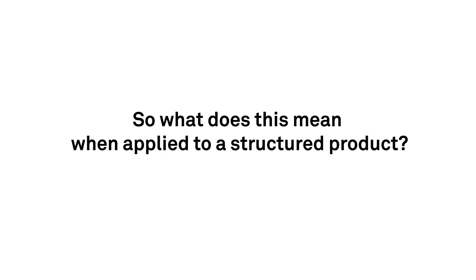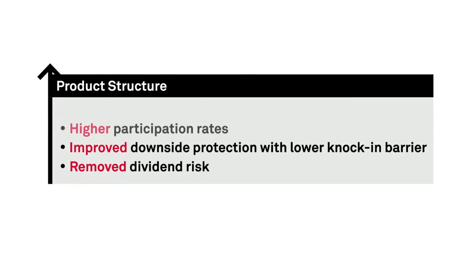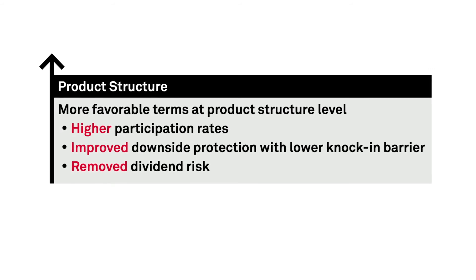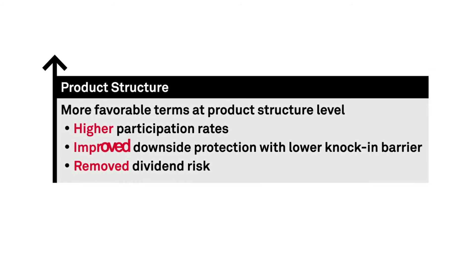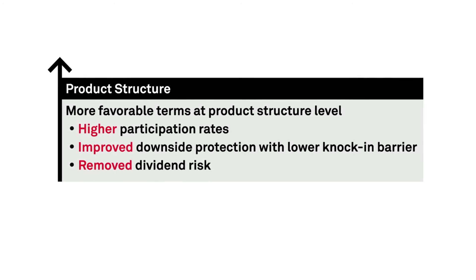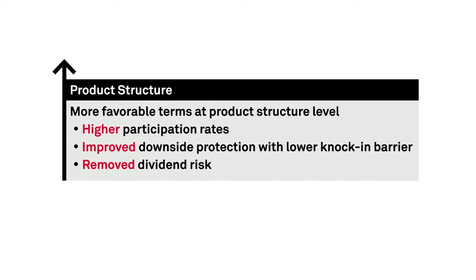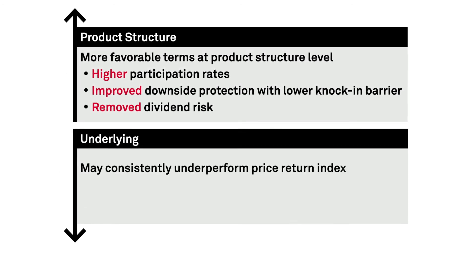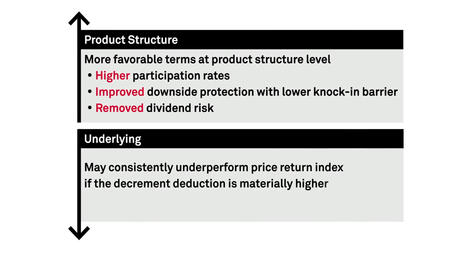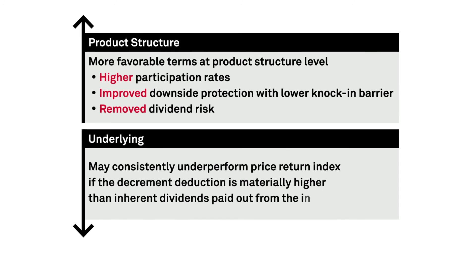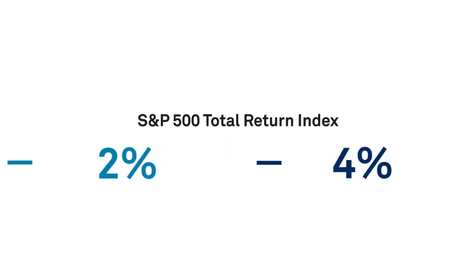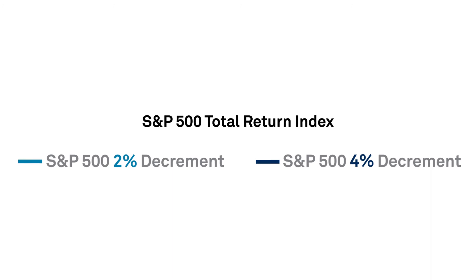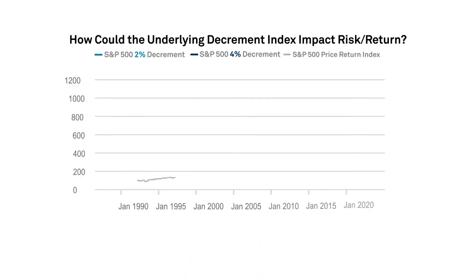So what does this mean when applied to a structured product? By eliminating dividend risk through a decrement index, issuers could provide more favorable terms at the structural level, such as higher participation rates and improved capital protection. It is important to understand that the gain on favorable product terms does not come without cost, as there is always a risk that the decrement index may consistently underperform its corresponding price return index if the decrement deduction is materially higher than inherent dividends paid out from the index. We constructed two fixed percentage decrement concepts on the S&P 500 total return index, applying different percentages of deduction to help illustrate these potential risks.